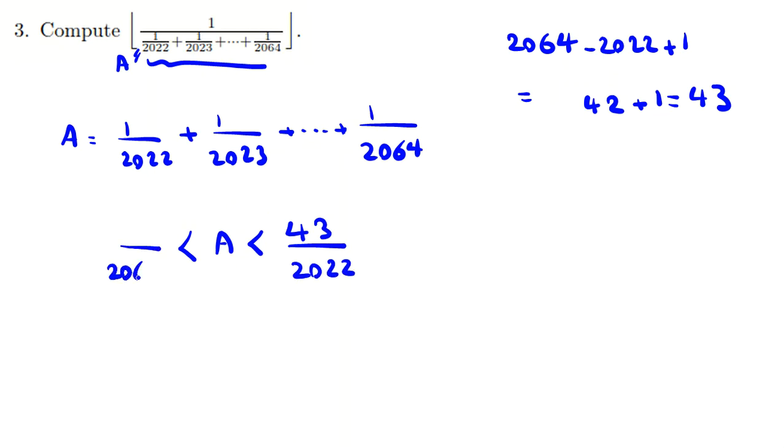And we can say this, now 1 over A, we want to see 1 over A is between what numbers. 2022 over 43 and 2064 over 43.